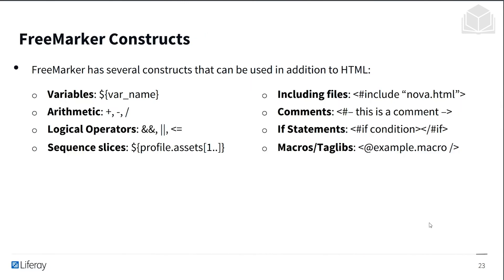FreeMarker constructs can be used in addition to HTML. This includes variables, arithmetic, logical operators, sequence slices, file includes, comments, if and conditional statements, and macros and taglibs. This gives the developer a lot of flexibility to implement higher-level ideas within the template itself, in addition to HTML.